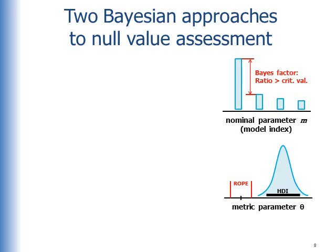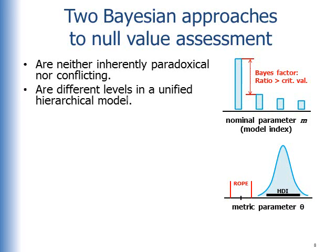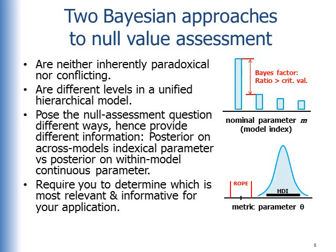In summary, there are these two Bayesian approaches to null value assessment. They're neither inherently paradoxical nor conflicting. They are different levels in a unified hierarchical model, as I diagrammed earlier. They pose the null assessment question different ways, hence they provide different information: the posterior on a cross-model indexical parameter versus a posterior on a within-model continuous parameter. These two different approaches require you to determine which is most relevant and informative for your application.